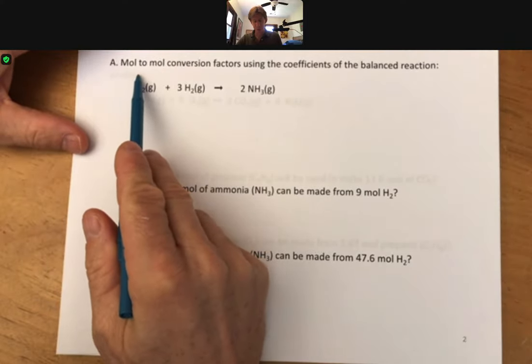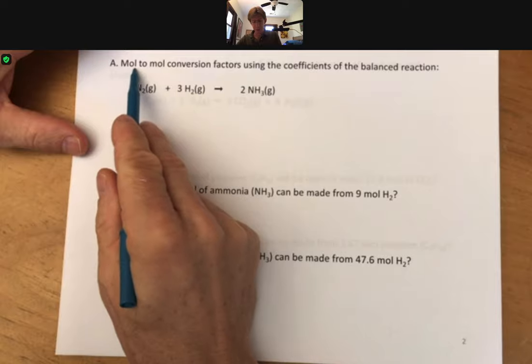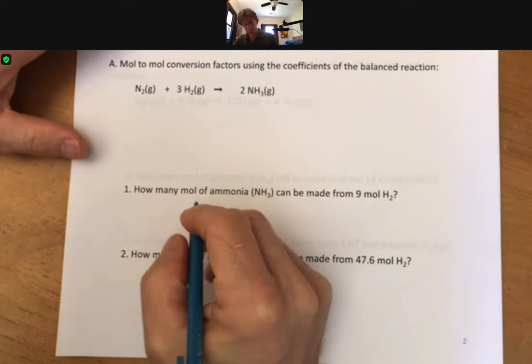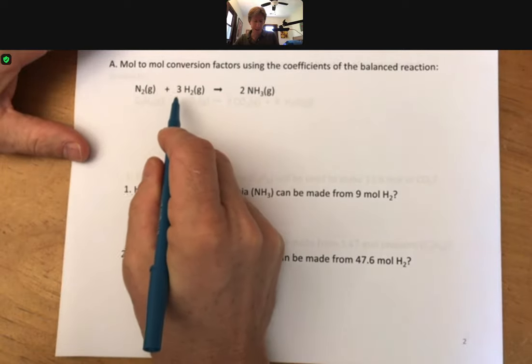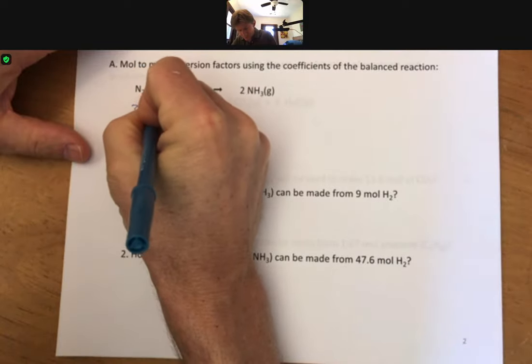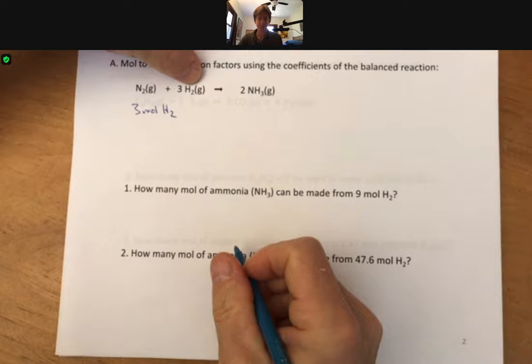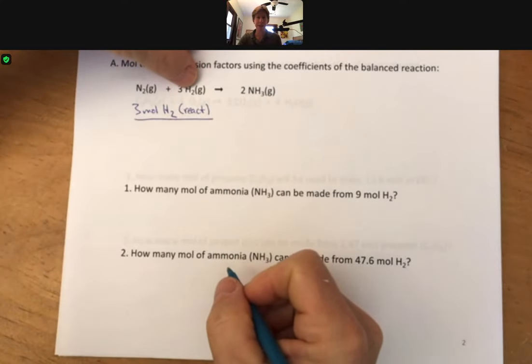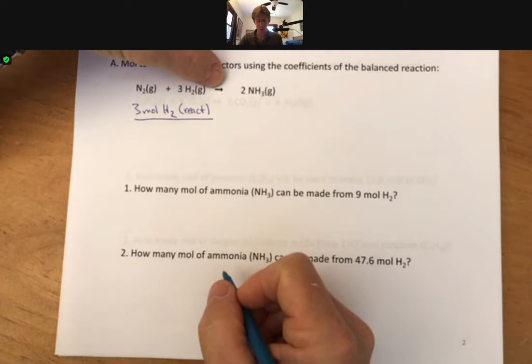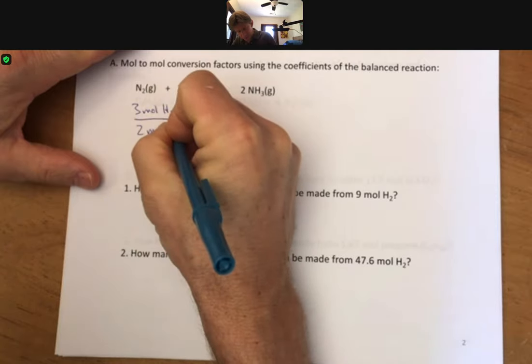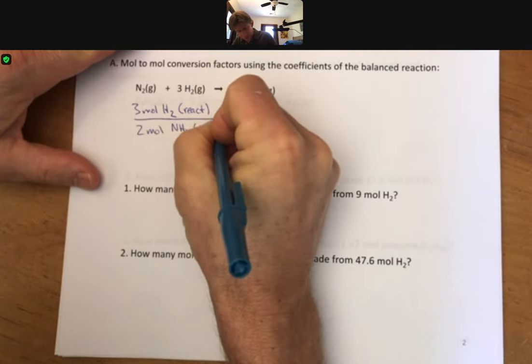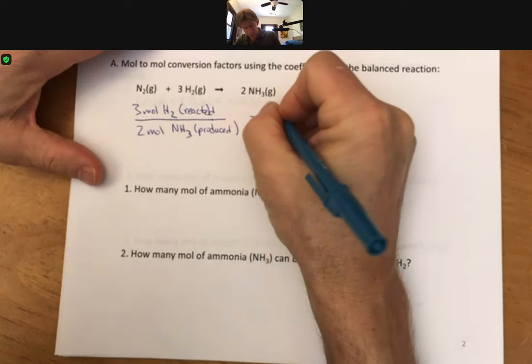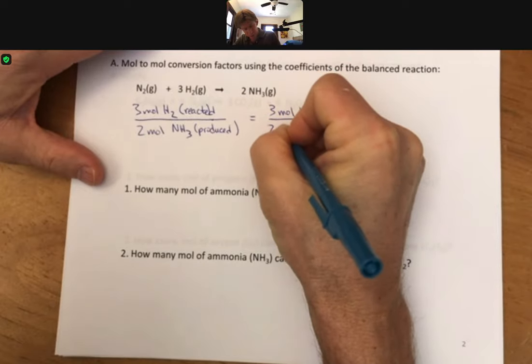Now, again, this is a bit of review, but I want to cover more depth this time. We've talked about mole-to-mole conversion factors using the coefficients of the balanced reaction. And as examples, some of those we might come from this reaction would be that three moles of hydrogen react to produce two moles of NH3 produced. And again, what we'll do from now on is we'll just do the three moles of hydrogen over two moles of ammonia. And the words reacted and produced will not be said. They don't affect the math. They don't cancel the units. Just part of our thought process.